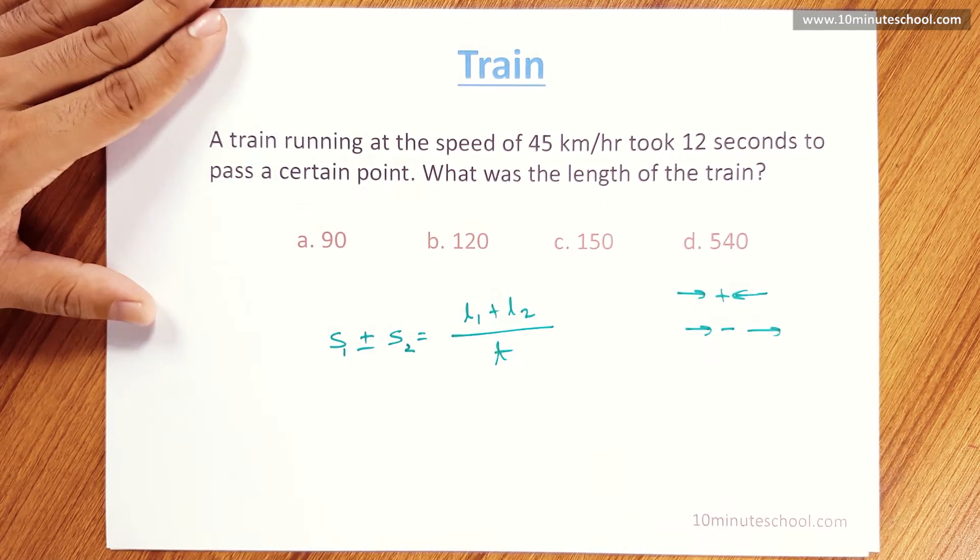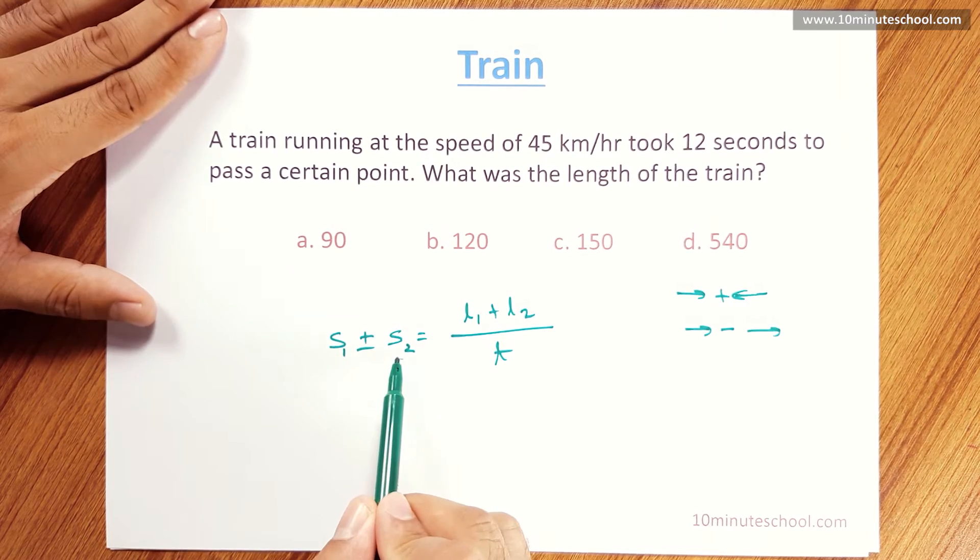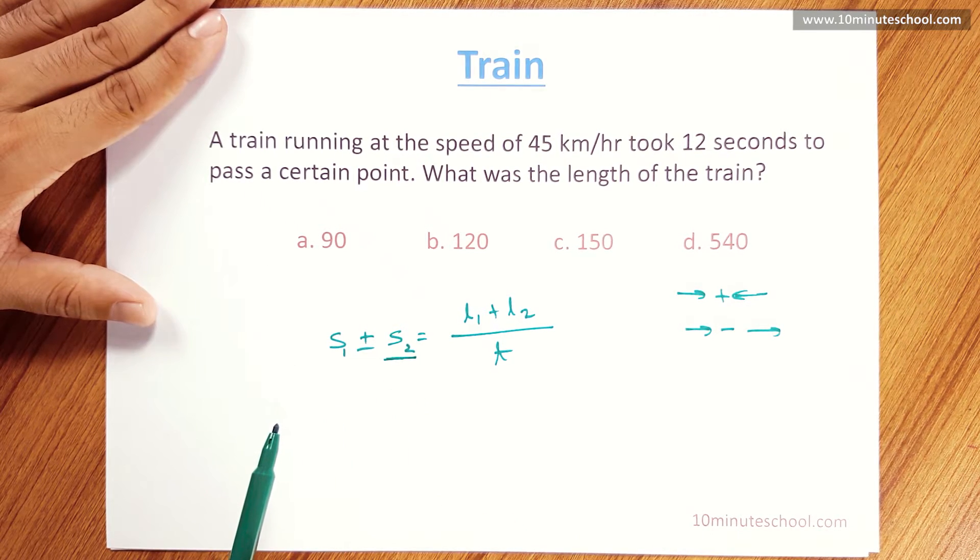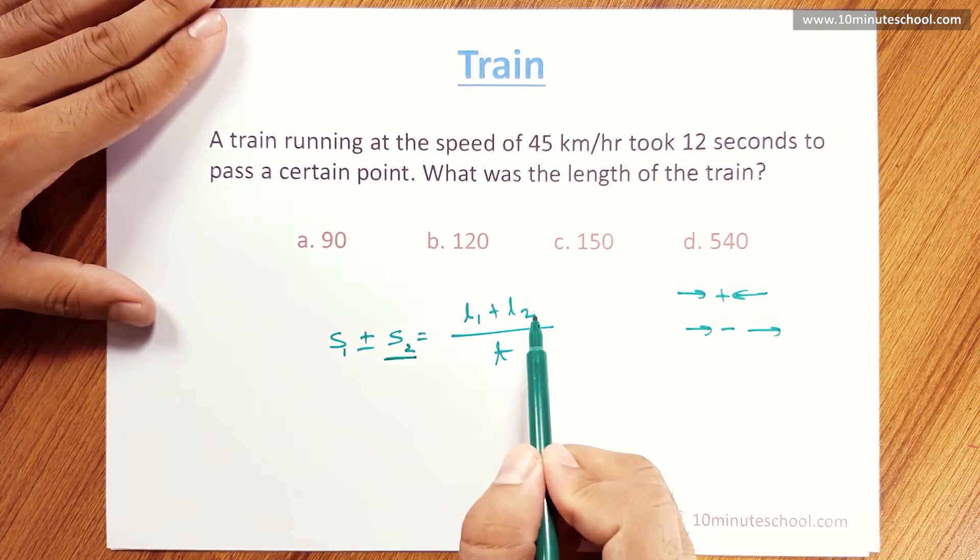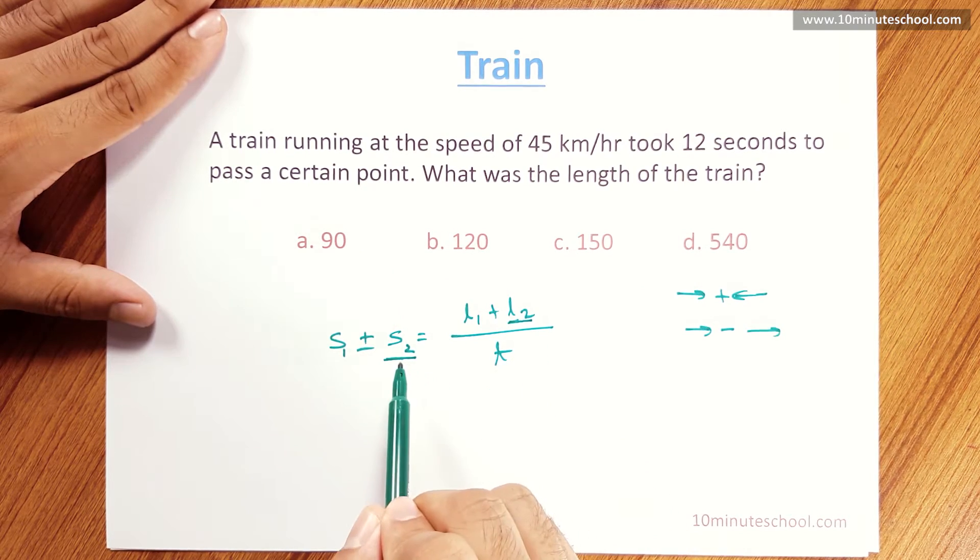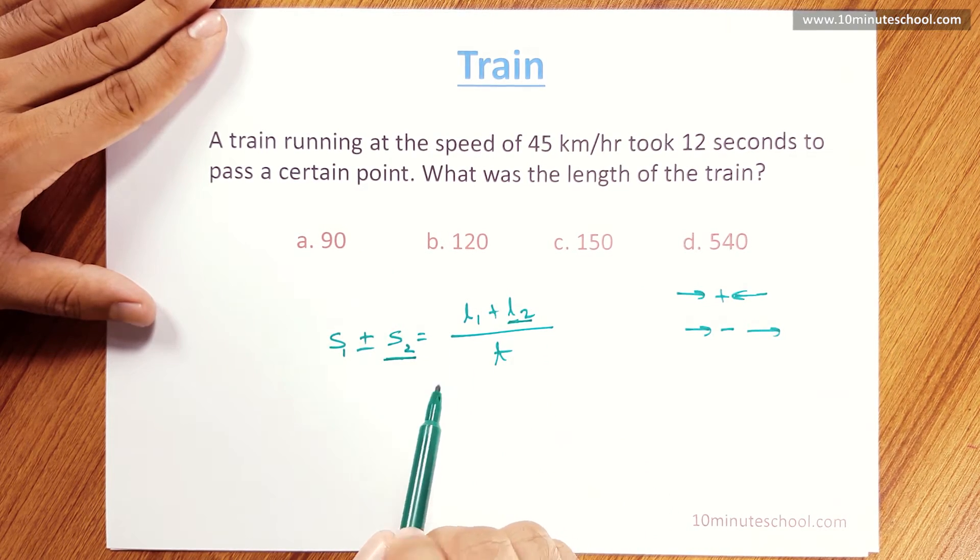As you can see, there are two trains. This train and a point. It is a point. Which length is the point? What length is the pointer? No. We have L2 as zero. So S2 is zero, not L2 zero.